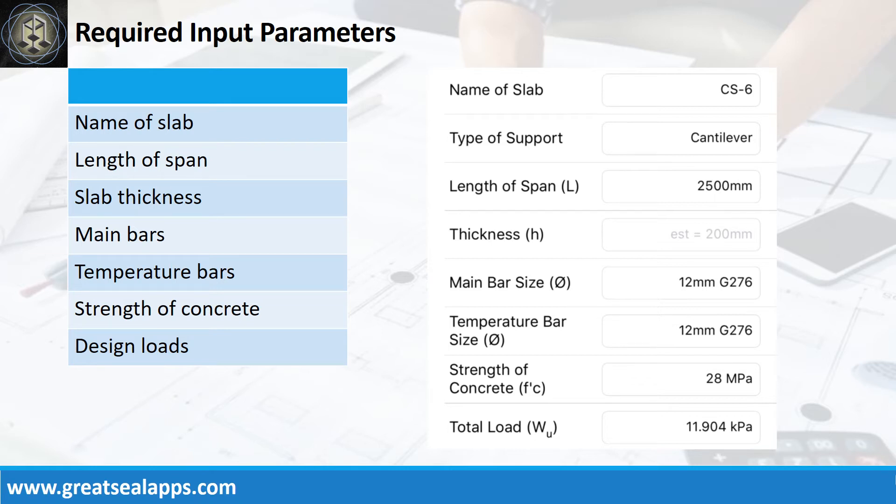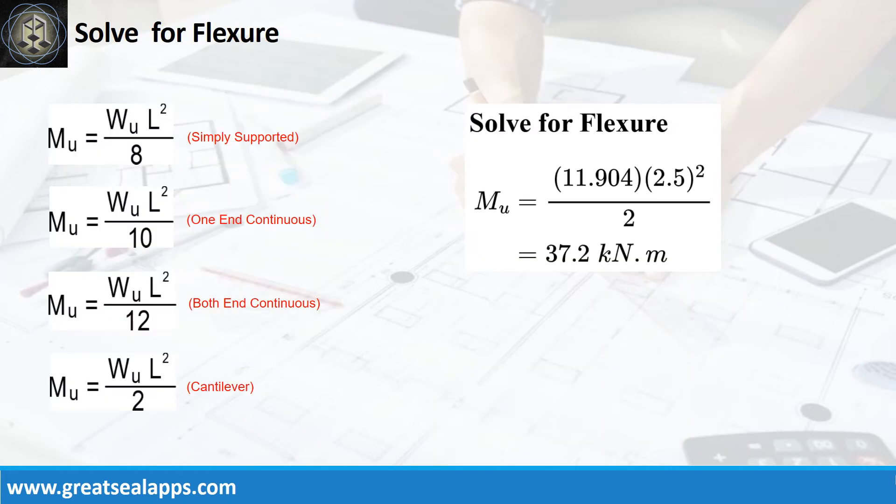Given factored load equals 11.904 kN per meter and L equals 2.5 meters, the maximum moment is 37.2 kN meter.